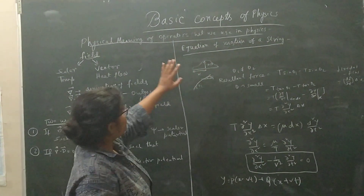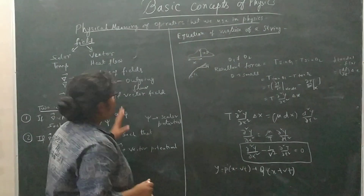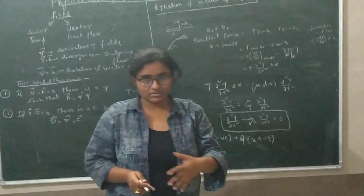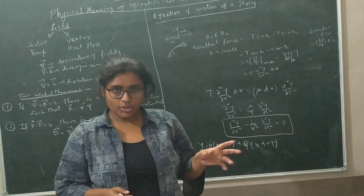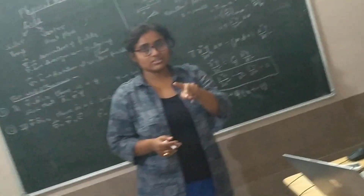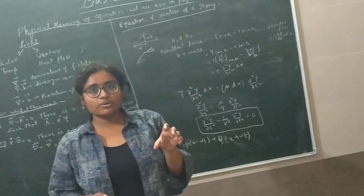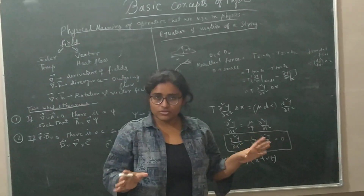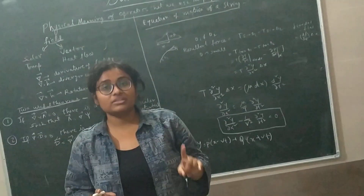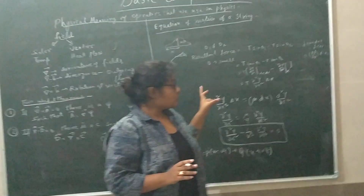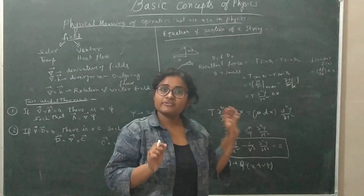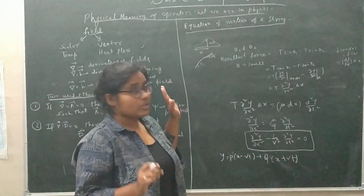The physical meaning of operators that we use in physics. Basically we always mix math and physics — physics is also math in a way, and we also use operators. But we don't know the meaning of those operators. The basic difference between math and physics is that mathematicians do their job in an abstract manner; they don't care whether something is physical or not. But in physics, the most important thing is that whatever you use must have a physically feasible meaning.